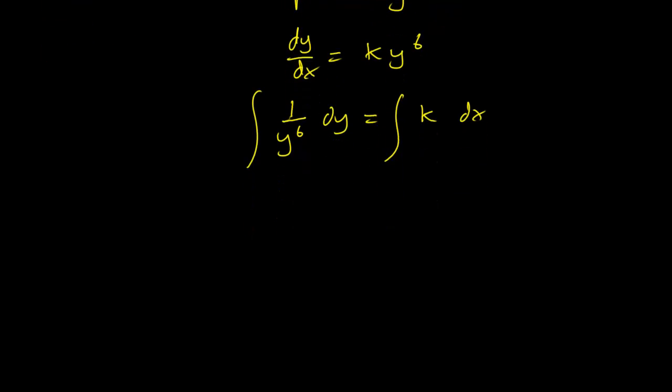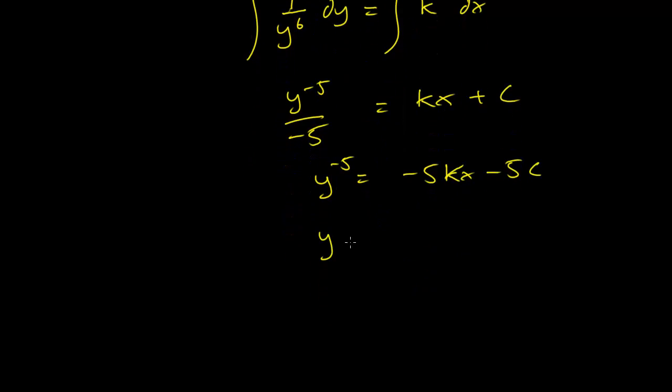Okay, so y^-6... this is just going to be y^-5 over -5 equals kx plus c, so y^-5 equals -5kx - 5c, raised to the negative one-fifth power.